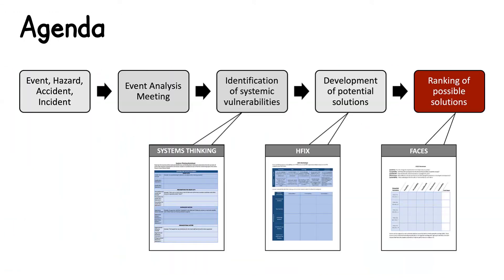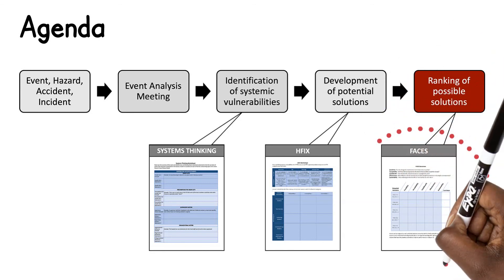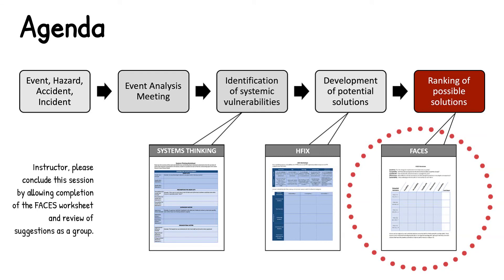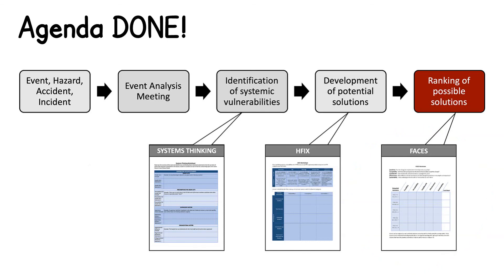Finally, the last component of this scenario is to evaluate some of the interventions you have developed using the FACES worksheet. As you probably guessed from the example, this rating can be a bit subjective. It's okay to be unsure of how to rate certain factors of your interventions. This can be completed individually or in groups. Once completed, you will have used a systems thinking and human factors approach to identify systemic failures, develop potential interventions, and rank those interventions. Keep in mind that the tools provided in this scenario should be treated as guidelines — they are not meant to be restrictive or deter you from using other techniques. Best of luck!